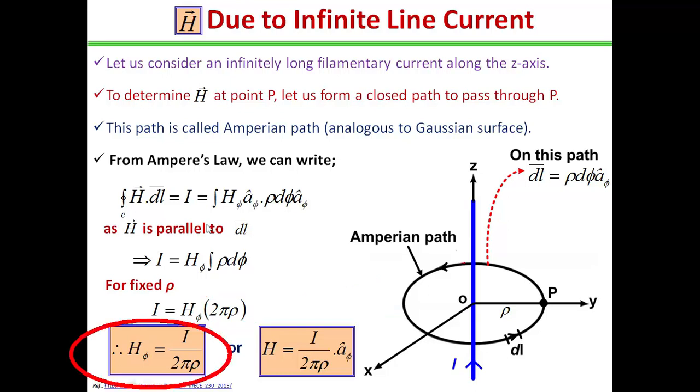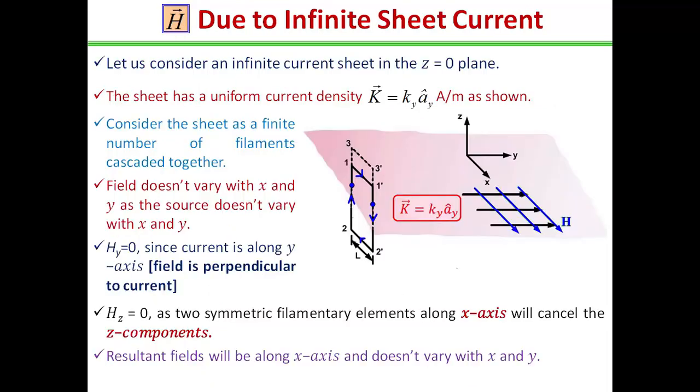2πρ is basically the circumference of the Amperian surface. So we can write H_φ is equal to I divided by 2πρ, or we can write as H is equal to I divided by 2πρ a_φ, where a_φ is the unit vector in the φ direction.